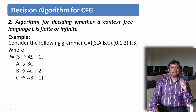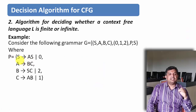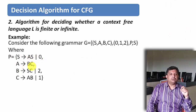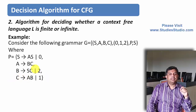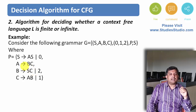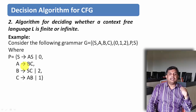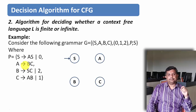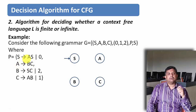Let us take one more example. The grammar is given with production rules: S derives AS or 0, A derives BC, B derives SC or 2, and C derives AB or 1. The next step is to draw our directed graph. The vertices are S, A, B, and C, which are the variables of this particular grammar.